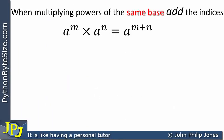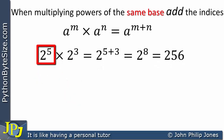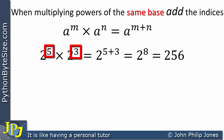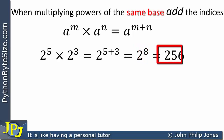As another concrete example, the base is 2 raised to the power 5, multiplied by the same base raised to the power 3. We add the 5 and the 3 to give us 2 to the 8, and 2 to the 8, when you calculate that, gives us 256.